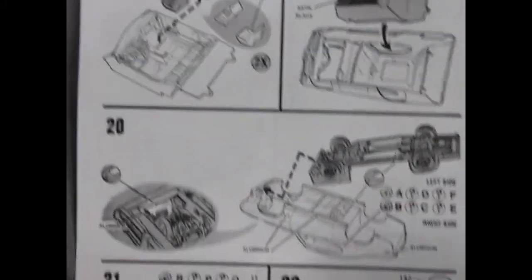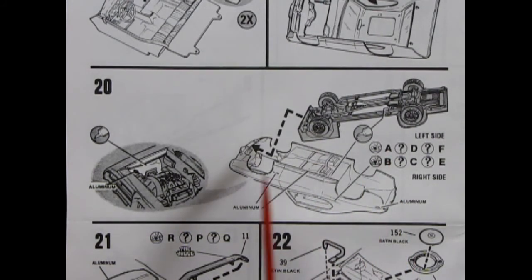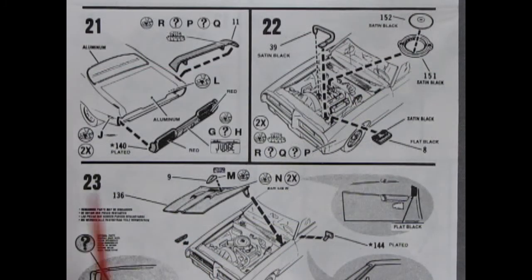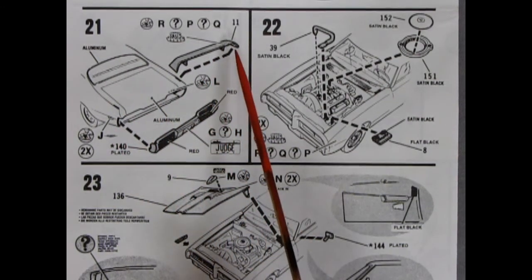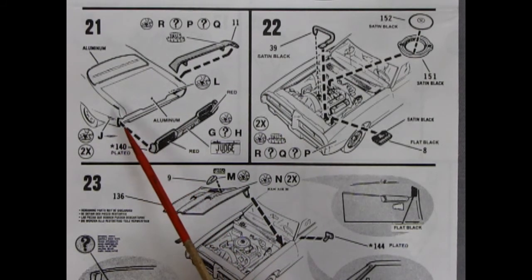For panels 20 it shows the chassis being popped in underneath the body. And it shows you where to glue the tops of the fender wells which is up and under here into our engine bay. Then panels 21 and 22 are showing our rear spoiler being glued on with our judge decals going on there, as well as the rear bumper which pops onto the back here.